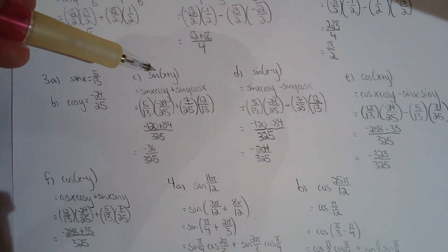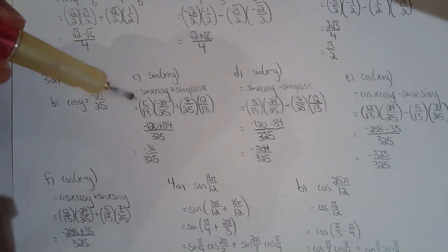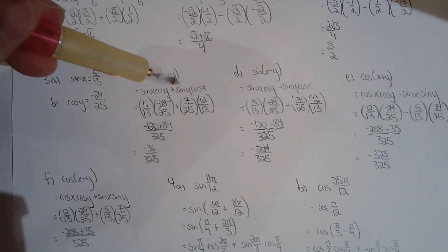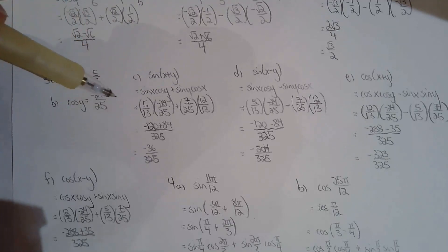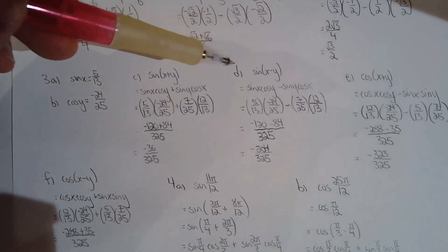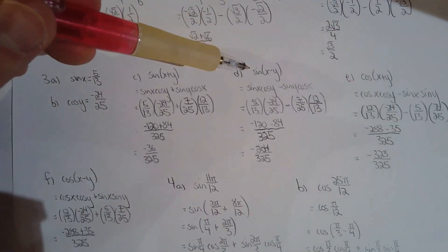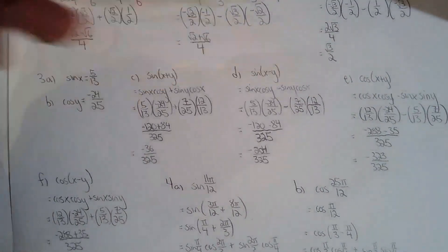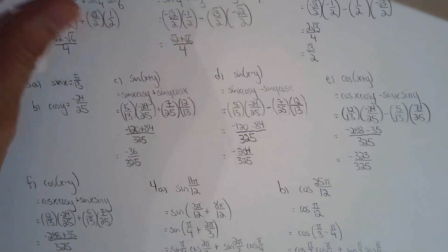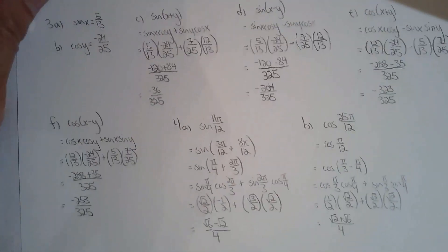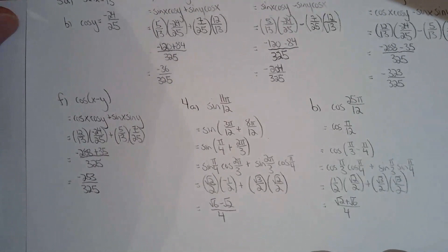Okay, so I use addition formula for sine to do part c, because I know what sine x cos y sine y cos x is. So I know the four ratios, and I just evaluate. So I did the same thing for d, but instead I'm going to use a subtraction formula for sine. For e, I'm using the addition formula for cosine. And for f, I'm using the subtraction formula for cosine.